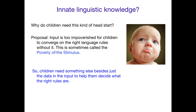This issue of the input being too impoverished is sometimes called the poverty of the stimulus. Poverty — impoverished — the stimulus is the data, the input. The stimulus is too poor, too ambiguous, too noisy — it's not good enough on its own to get the right language rules, the right linguistic system, the right grammar. So the idea is that's why you need a little bit of a head start with this innate linguistic knowledge in the language acquisition device. Children need something else besides just the data and input to help them decide what the right rules of the language are.